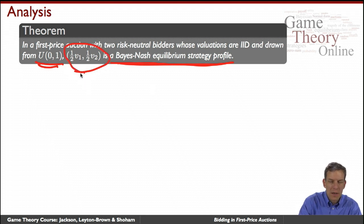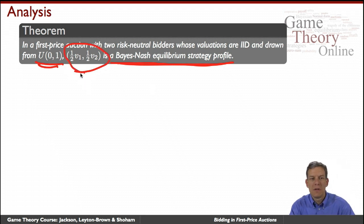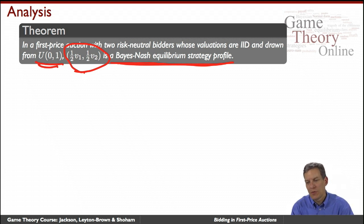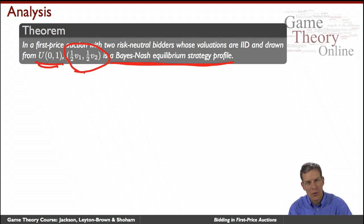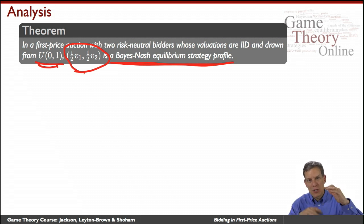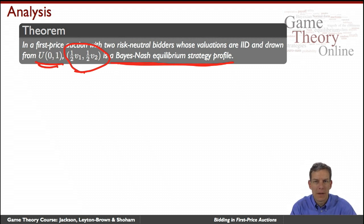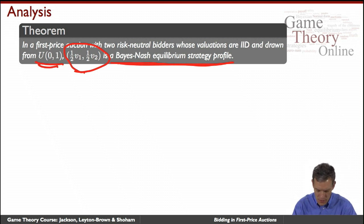The claim is that in this Bayesian Nash equilibrium, each person simply bids half their value. So if my value is 3/4, I bid 3/8; if my value is 1/2, I bid 1/4. I take whatever my value is and shade it by half — that's my bid. Let's verify that this is indeed a Bayesian Nash equilibrium.